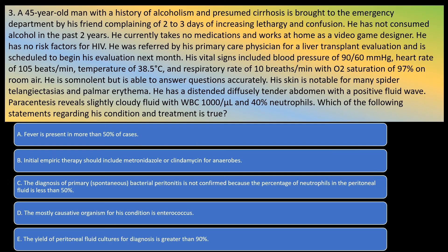Question number 3. A 45-year-old man with a history of alcoholism and presumed cirrhosis is brought to the emergency department by his friends complaining of 2-3 days of increasing lethargy and confusion. He has not consumed alcohol in the past 2 years, takes no medications, and works at home as a video game designer. He has no risk factors for HIV and was referred for a liver transplant evaluation. Vital signs include blood pressure of 90 over 60 mmHg, heart rate of 105, temperature of 38.5 degrees Celsius, respiratory rate of 10 breaths per minute, and oxygen saturation of 97% on room air. He is somnolent but able to answer questions accurately. His skin is notable for spider telangiectasias and palmar erythema, with a distended, diffusely tender abdomen and positive fluid wave.